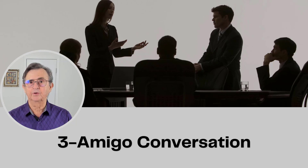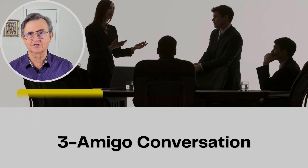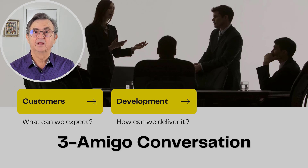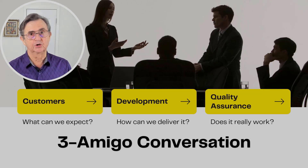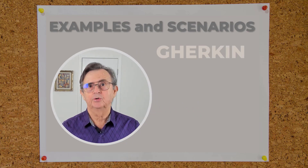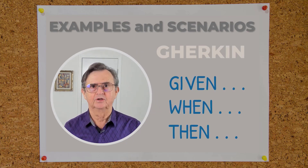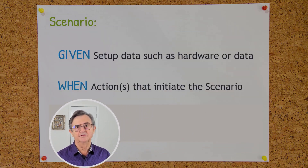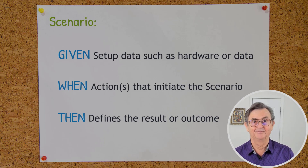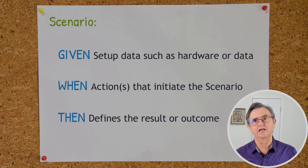The participants represent three different and equally critical perspectives: the customers, typically supported by ITBAs — what exactly can we expect? Development — how can we deliver it? And quality assurance, aka testing — does it really work? The outcome of this collaboration are the aforementioned examples and scenarios. The most common method for capturing those is in a language called Gherkin, which follows a very simple given-when-then structure: given this situation, when this event happens, then these outcomes will be achieved. This simple syntax enables all involved parties to document acceptance tests in a language they all understand, promoting collaboration and mutual understanding of the required tests.